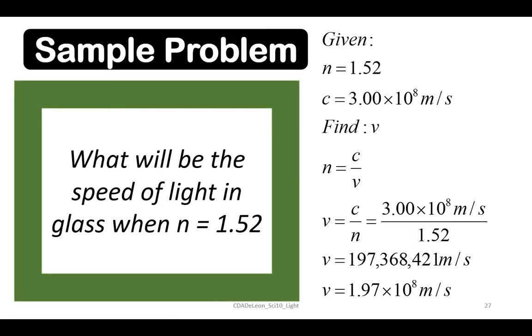Now let's have a sample problem. What will be the speed of light in glass when the Index of Refraction is 1.52? The given is n equals 1.52 and the speed of light is 3 times 10 raised to 8 meter per second. Find the new velocity.